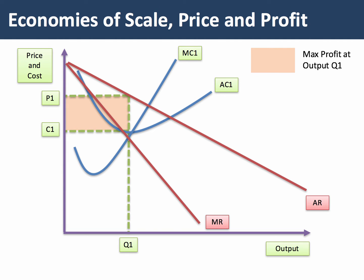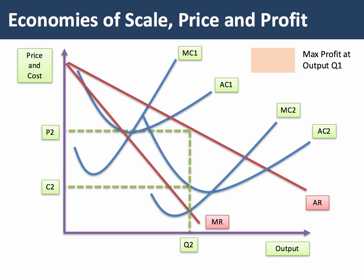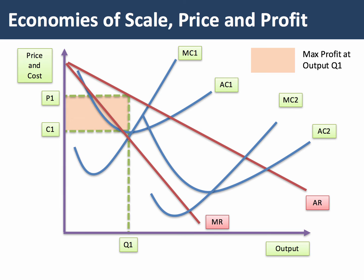Now, if they can achieve economies of scale, they can move down their long run average cost curve. So a profit maximising producer might be able to move to this output level Q2. Q2 is a higher output, and when MC equals MR at output Q2, the cost per unit has come down to C2. So the total profit, as we can see, is much higher at output Q2 compared with the profit at output Q1.